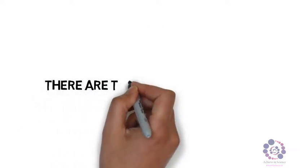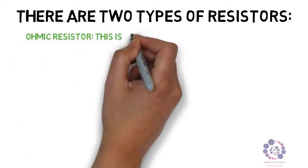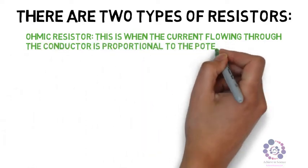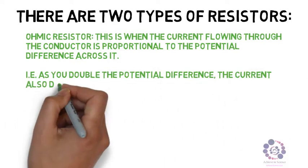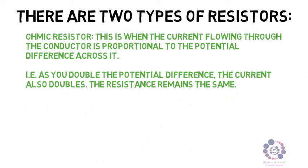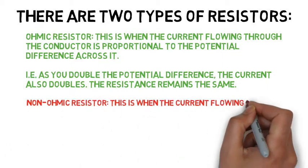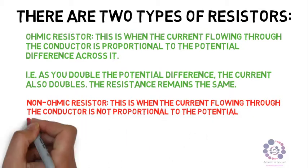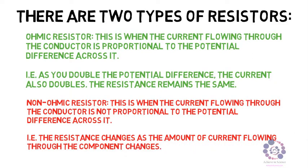It is also useful to remind ourselves of the two different types of resistors. An ohmic resistor is when the current flowing through the conductor is proportional to the potential difference across it — meaning if you double the potential difference the current will also double and the resistance will remain the same. On the other hand, a non-ohmic resistor is when the current flowing through the conductor is not proportional to the potential difference across it, so the resistance changes as the current changes.